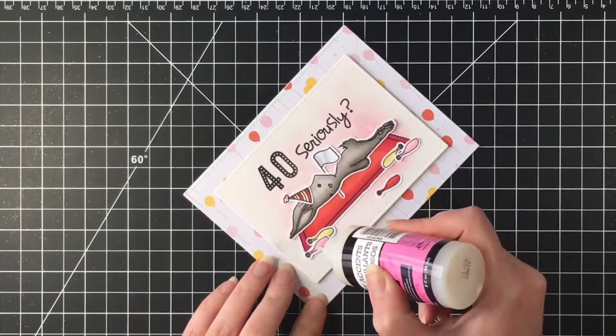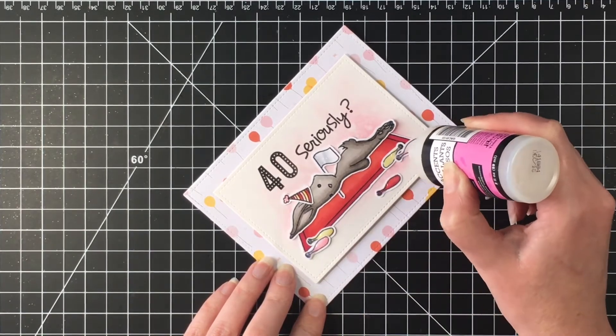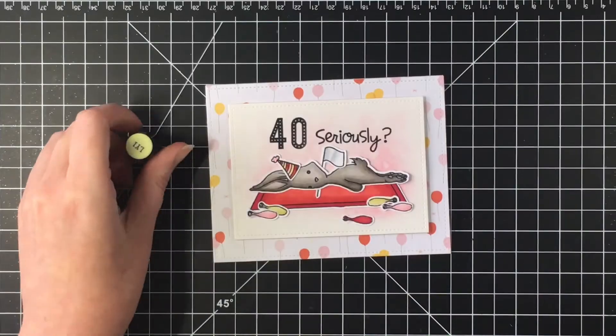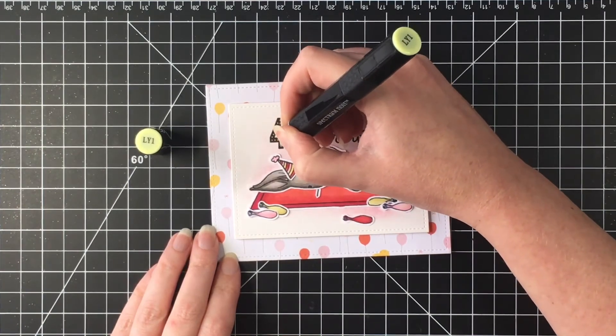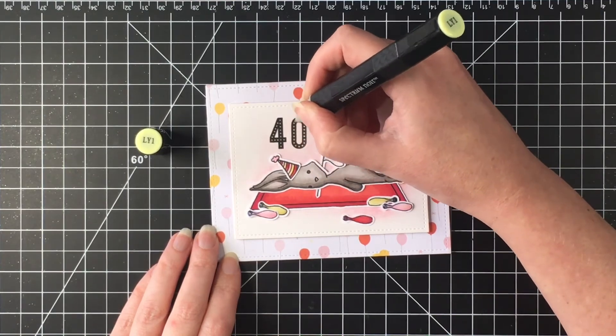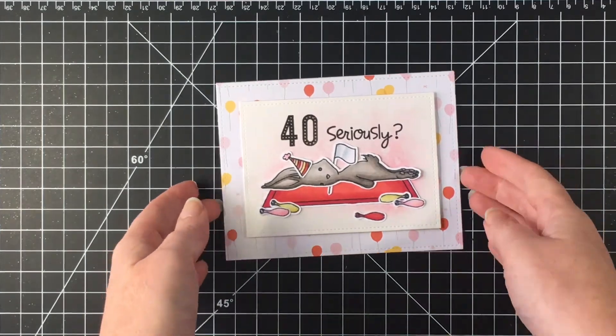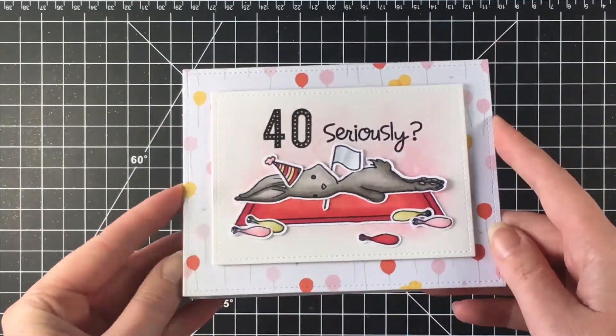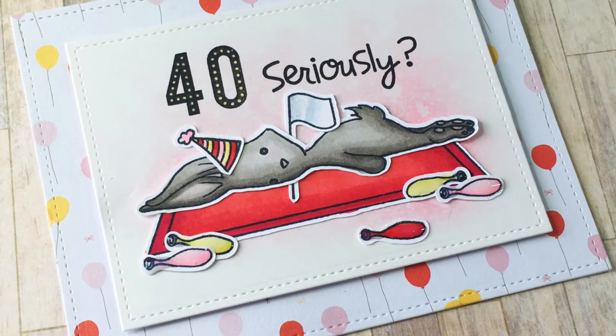So to finish it off, I'm going to use some glossy accents on the balloons just to give them that rubber type of feel. And then I decided I wanted to put some yellow inside the Slashy numbers here just to give it a little bit of a pop of color. It's hard to see on camera, but it definitely shows up in person on the card. So thanks everybody for watching. I will see you in the next video. Take care. Bye.